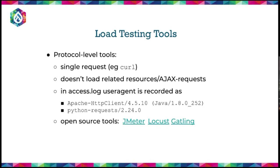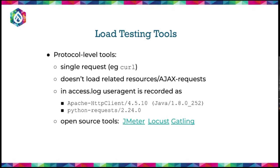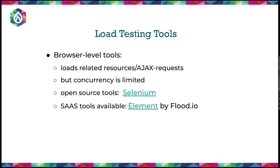Protocol-level tools basically make a curl request — they load one resource and don't load related assets like CSS, JavaScript, or images. In your Apache access log you can see these tools using their own user agents like 'python-requests' or 'java-requests'. Open source options include JMeter, Locust, and Gatling.